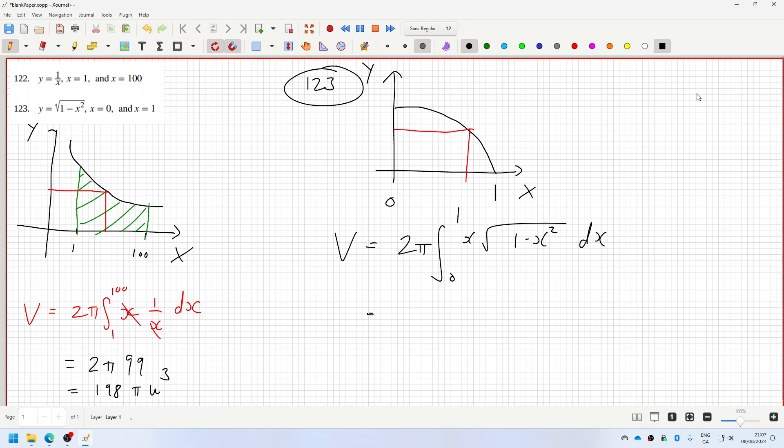Let me think. You could use a substitution here: u equals one minus x squared, so that means du/dx equals minus 2x.